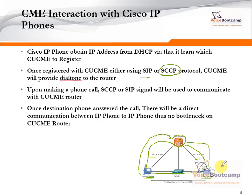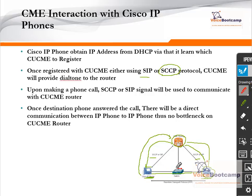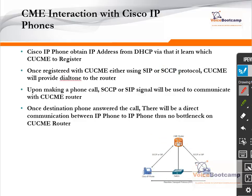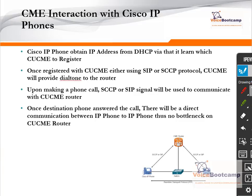Once the call is established, what they use is RTP directly between the two IP phones, point to point. Because the RTP is between the two IP phones directly, if the Call Manager Express router goes down, the active call will continue to function. However, any new call they try to establish will not work, because to establish a call the phone has to initiate a signal to the router. Once the signal is initiated and the destination phone answers, communication is directly between the end devices — so the router is no longer required, but new calls or call transfers cannot be initiated.